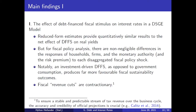What are the main findings on the effect of debt-financed fiscal stimulus on interest rates? I already mentioned that these reduced form estimates provide quantitatively similar results to the net effect of debt-financed fiscal stimulus on real yields — the short and the long rate, and even the spread. But for fiscal policy analysis, there are very clear non-negligible differences in the responses of the different agents in the model — households, firms, and the monetary authority — as well as the risk premium, to each of the disaggregated fiscal policy shocks.